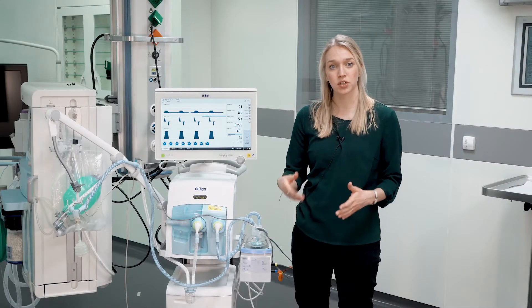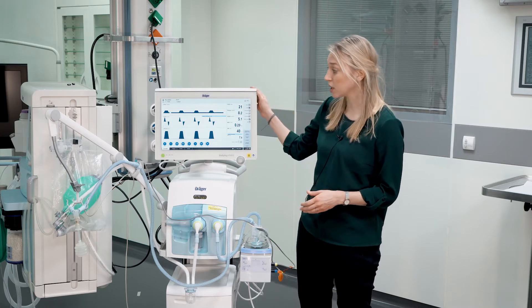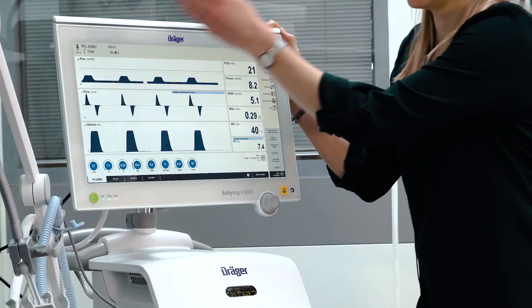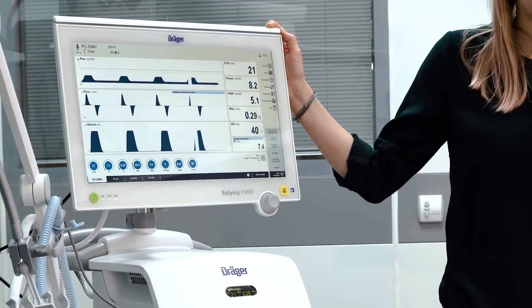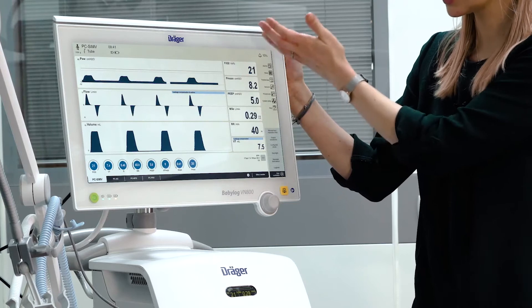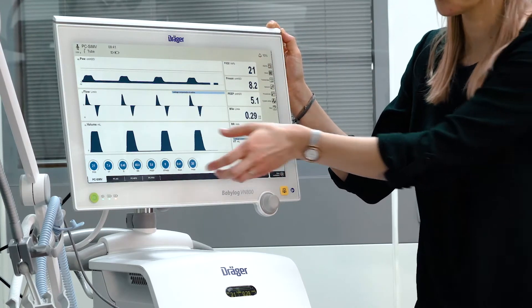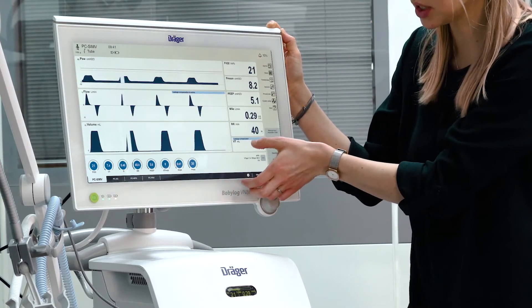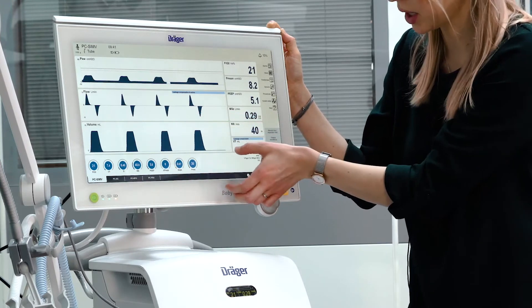We will now demonstrate how to adjust ventilation settings during operation. The screen is structured as follows: In the header bar, you can find your selected patient category and the ventilation mode. In the middle, you can find the waveforms and the respective measurements. You can adjust the settings of your ventilation modes in the lower part here.